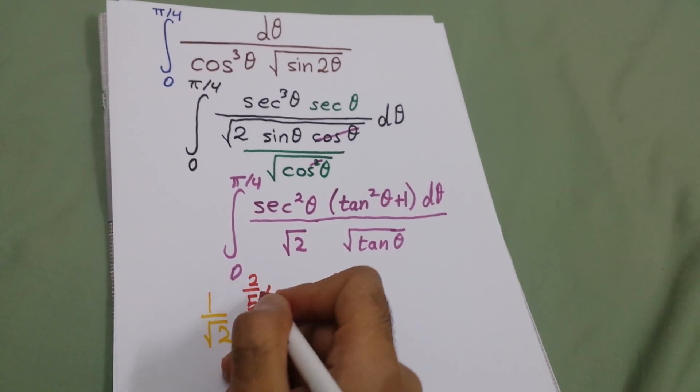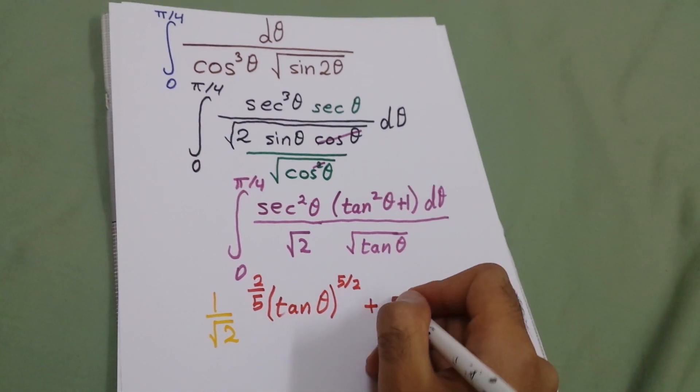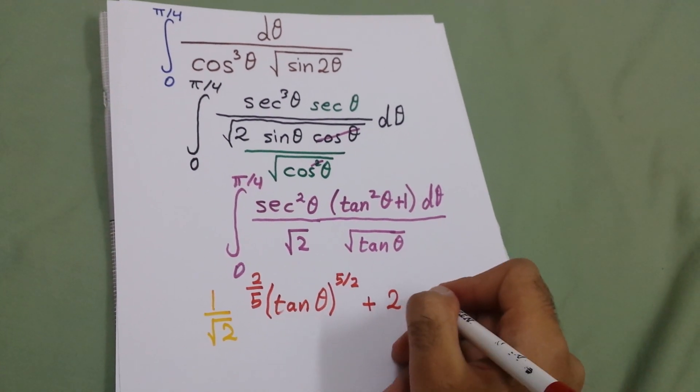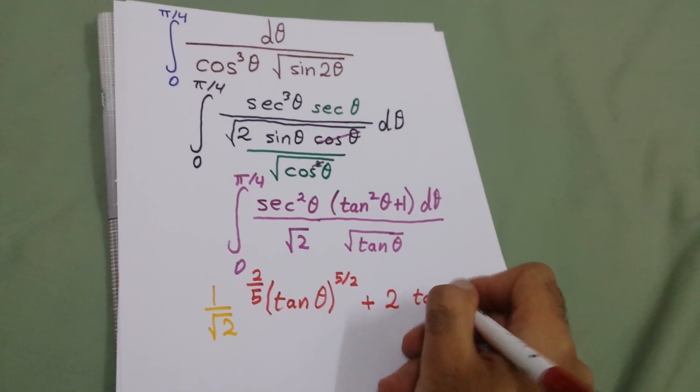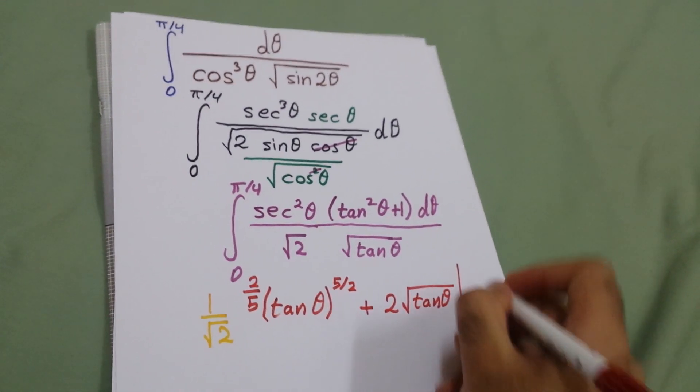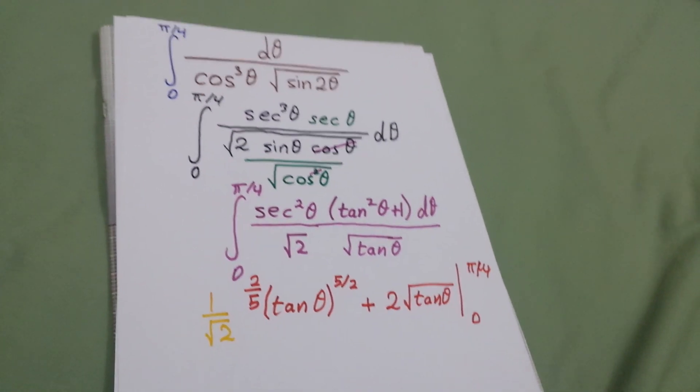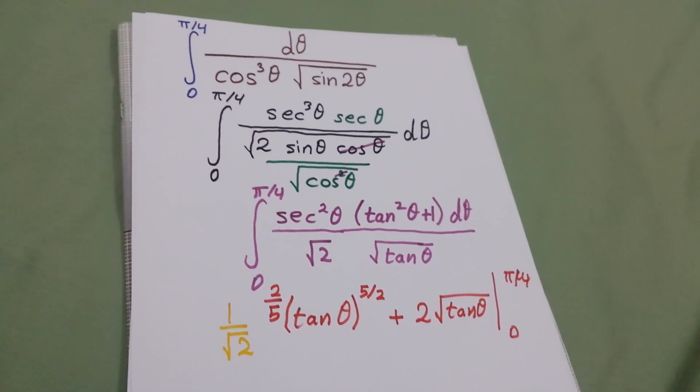Times 2 over 5, and plus 2 square root of tan theta, from 0 to π over 4. When we substitute 0 it will be 0.